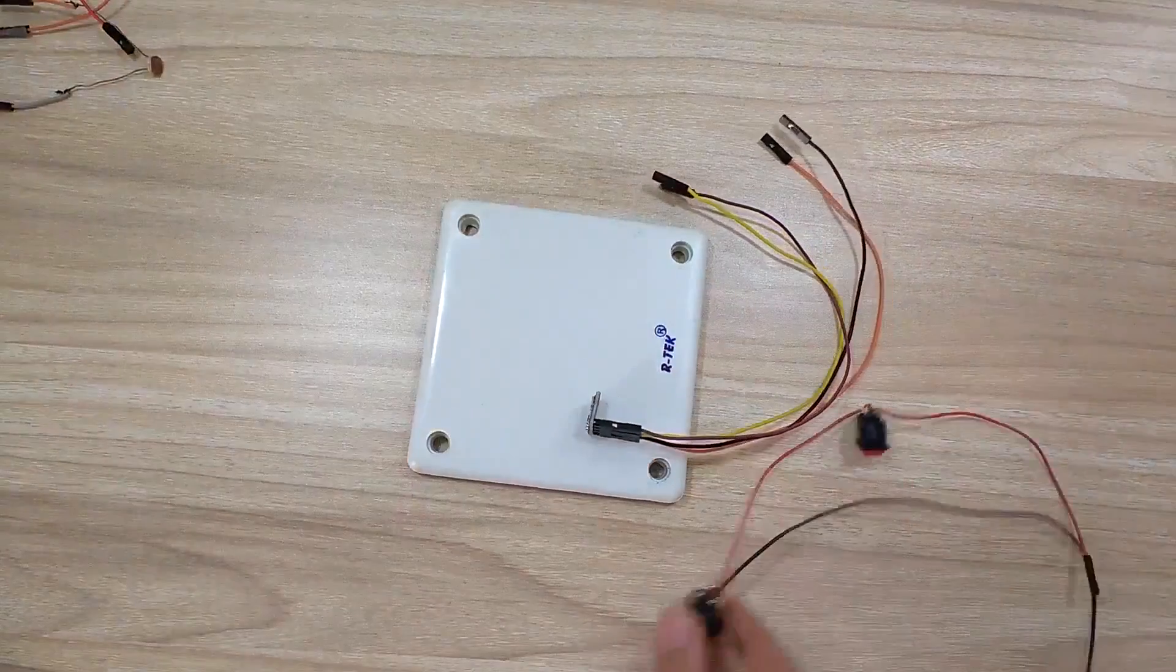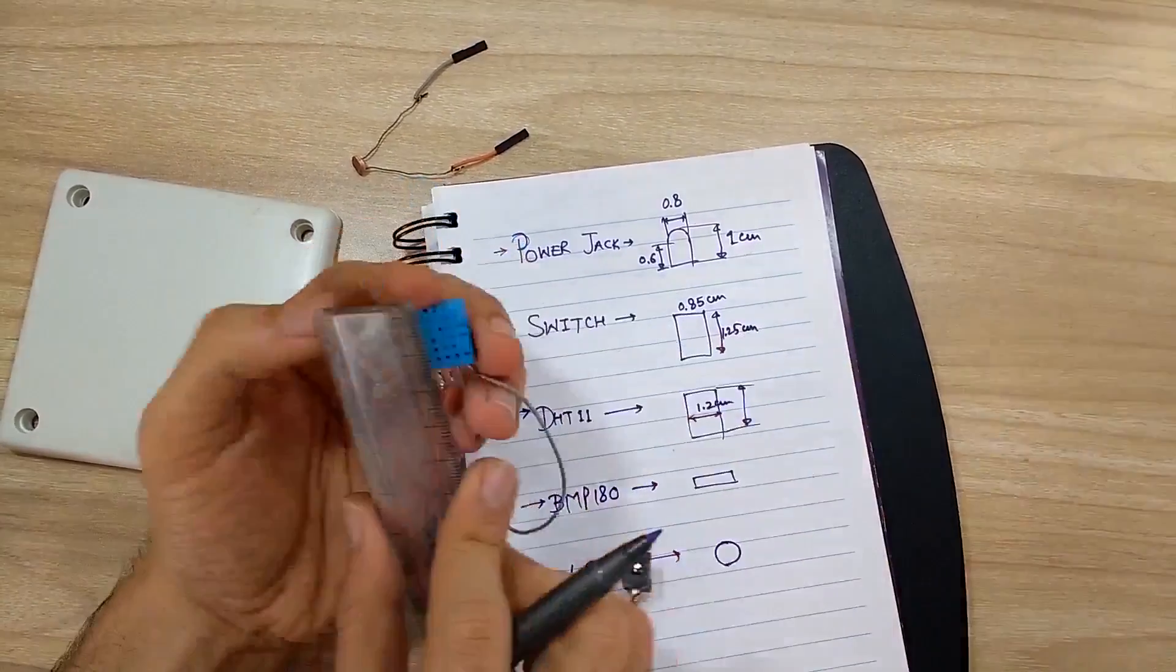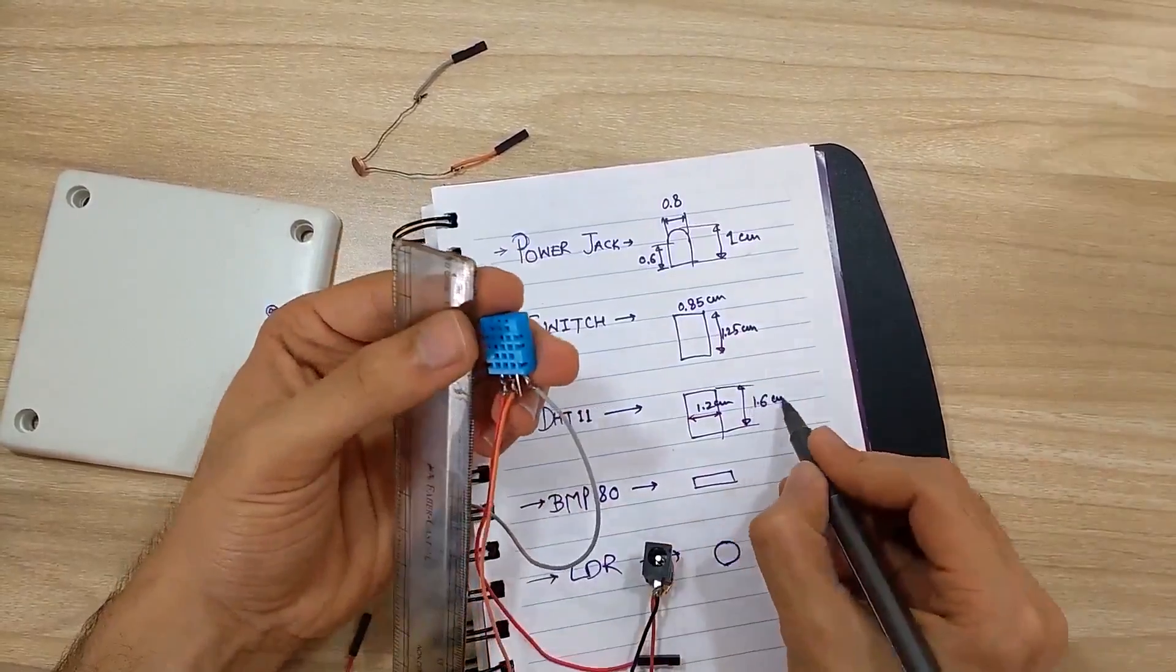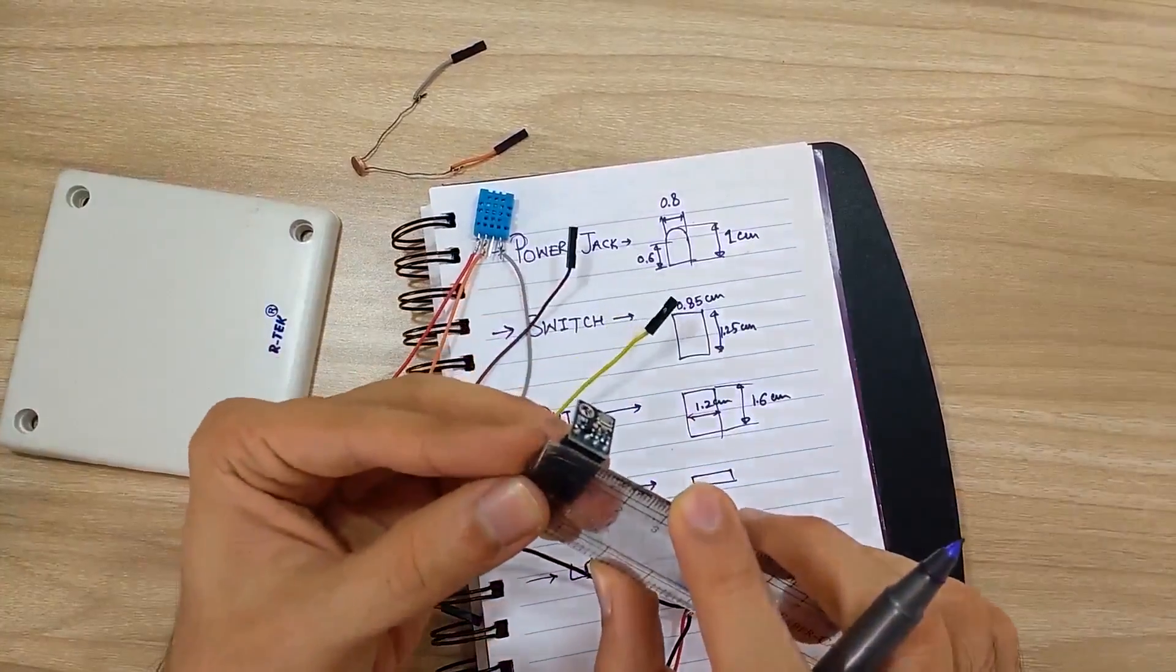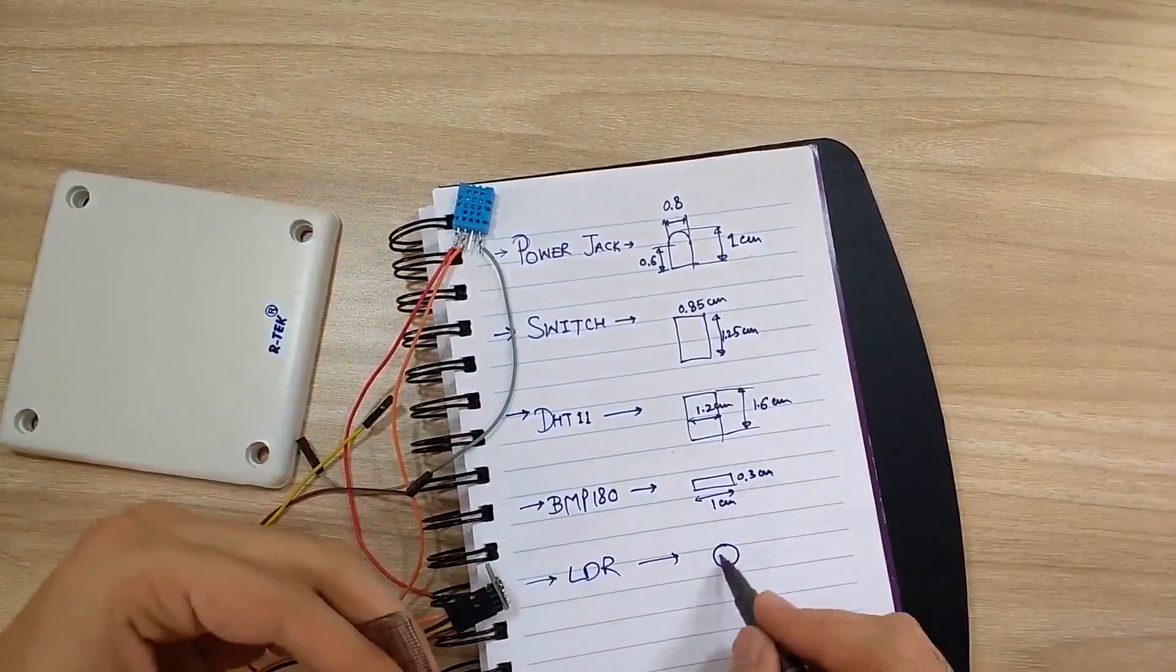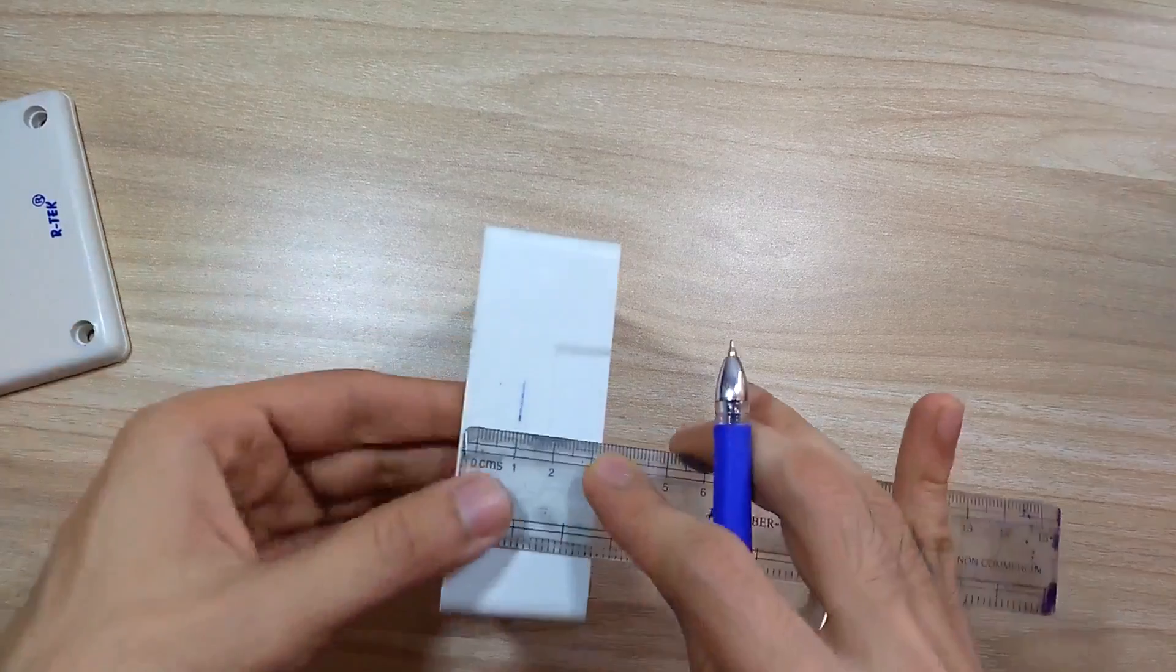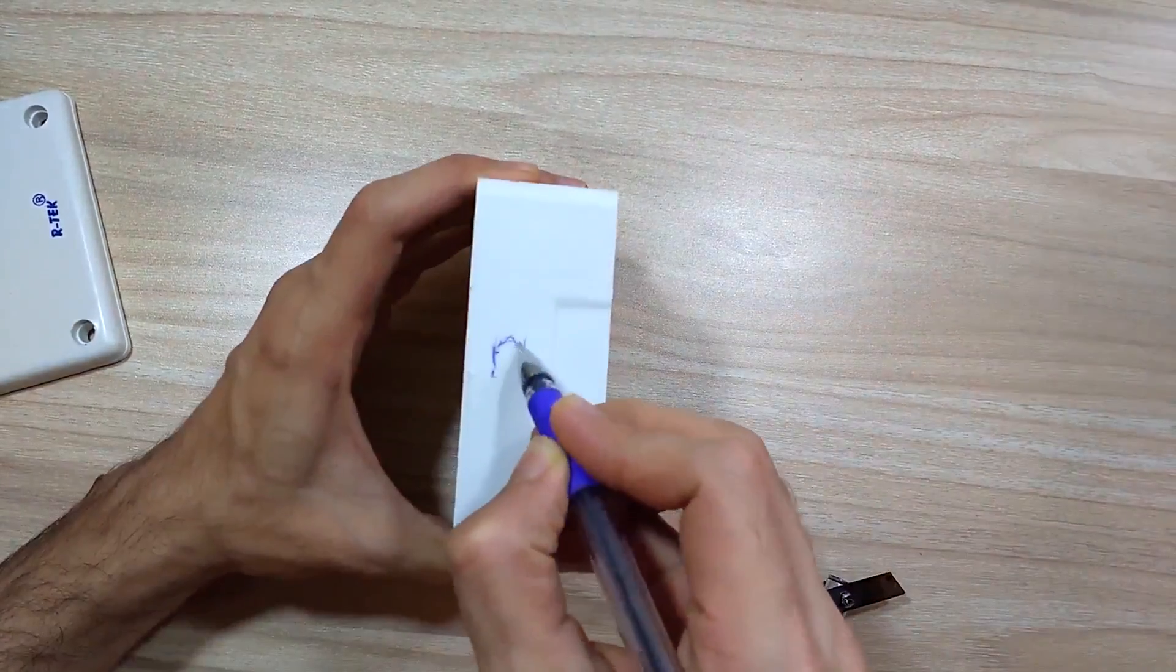Now it was time to put all the things inside our enclosure. I took measurements of our DHT11 sensor, I took measurements for our BMP180 sensor and measurements for our LDR.